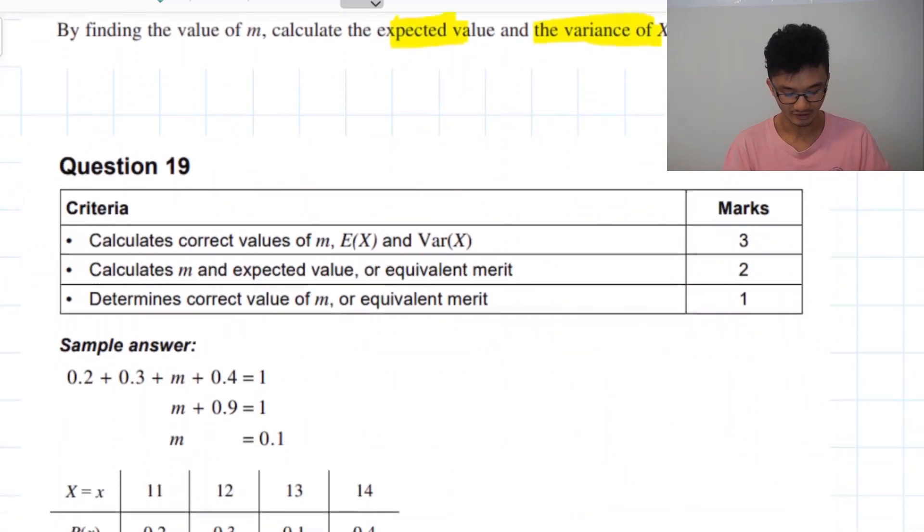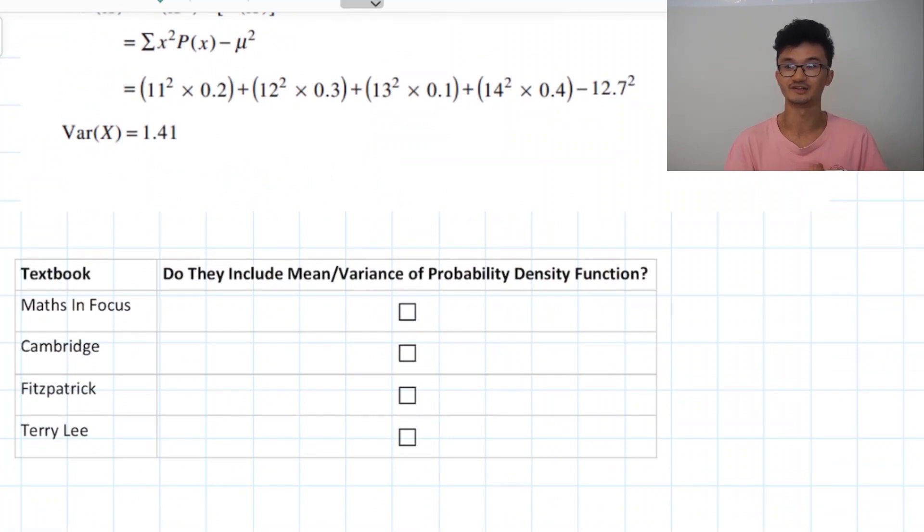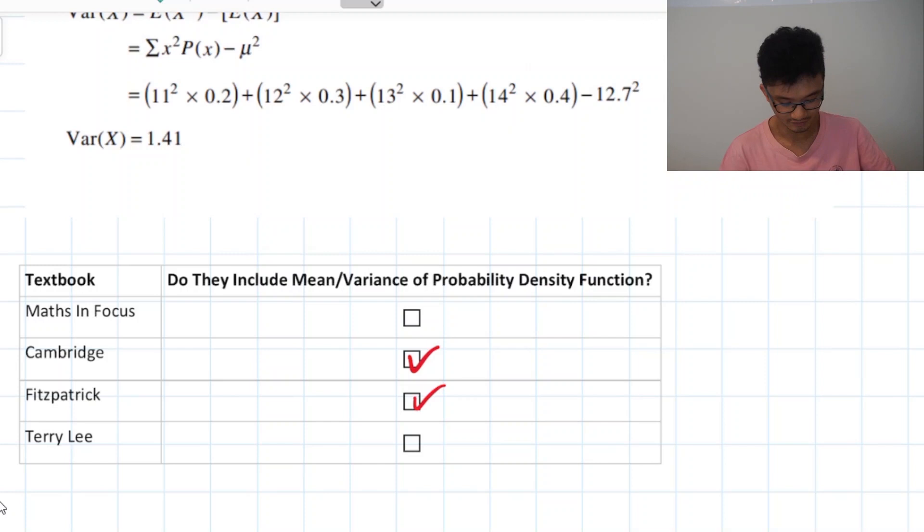But you know because this is a new syllabus you guys are the first time to do this in 2020 a lot of different resources have included it and it's an idea of oh let's just teach it just to be safe kind of thing. So for example Maths in Focus they don't include that, Cambridge does include it, Fitzpatrick does include that, and Terry Lee well I couldn't even find anything about probability density functions. That's where we're at with all these the big four textbooks here.